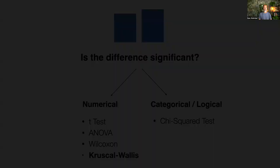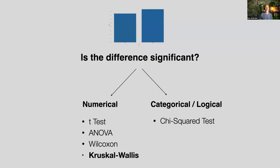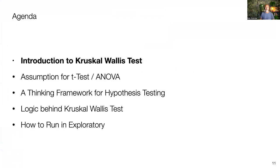But today I'd like to focus on this Kruskal-Wallis test. So here is the agenda: I'm going to introduce the Kruskal-Wallis test briefly. And then next, the assumptions for T-test and ANOVA — setting up the motivation for why you'd want to use the Kruskal-Wallis test rather than T-test and ANOVA.